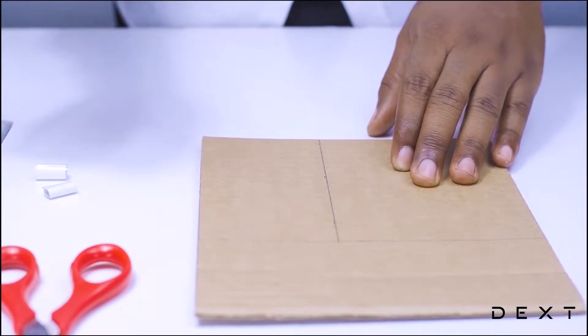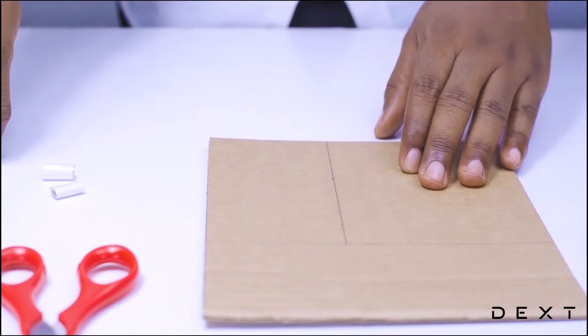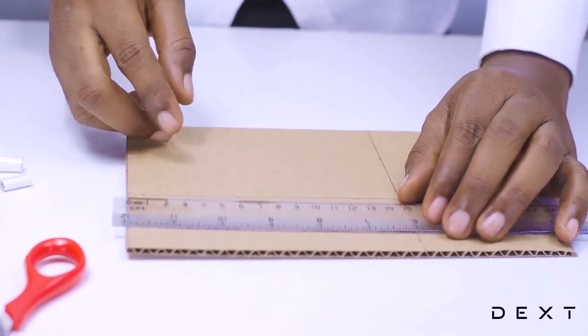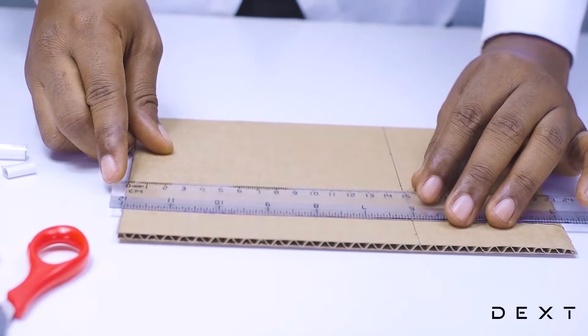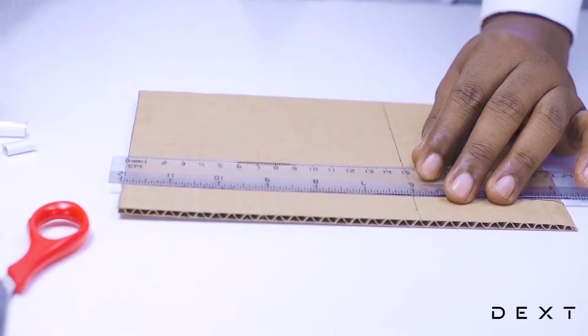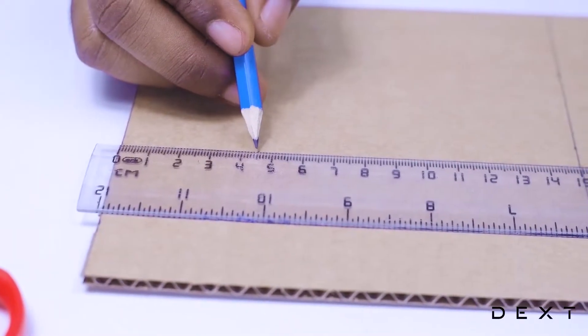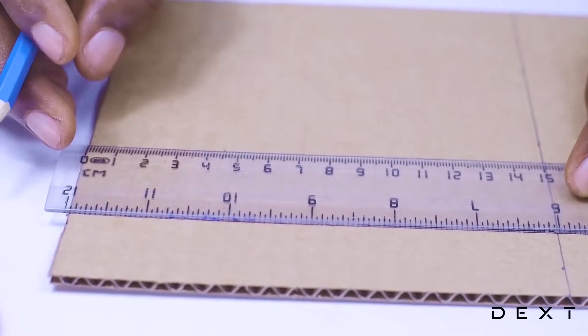Before we cut our rectangle, we need to do a few more measurements. We are going to measure 4.5 cm from the shorter part of our rectangle.